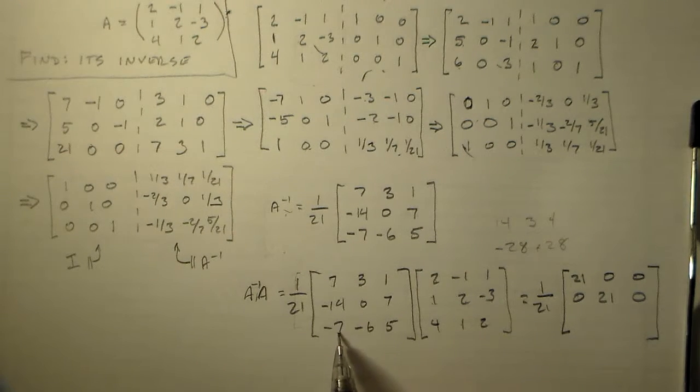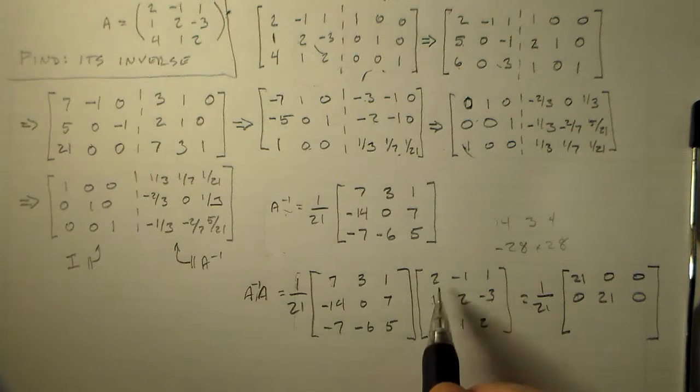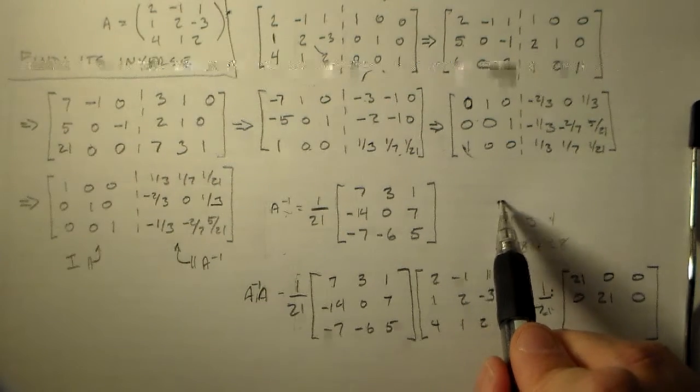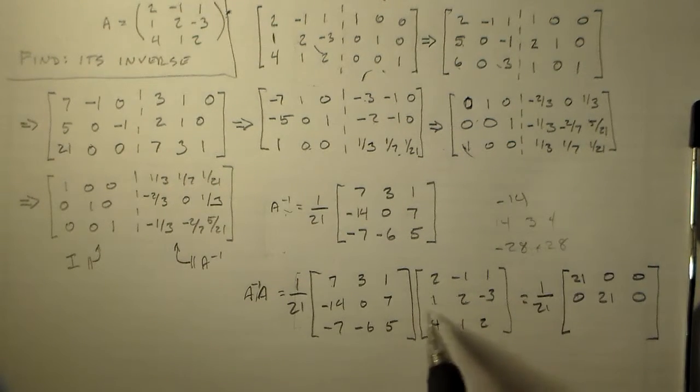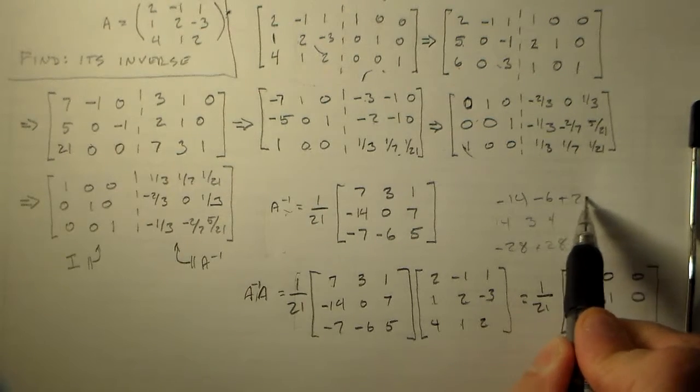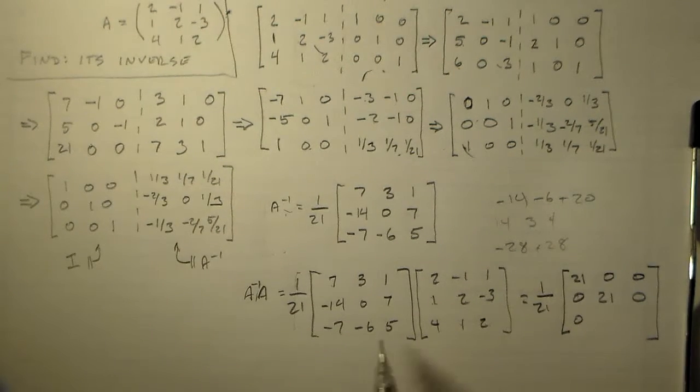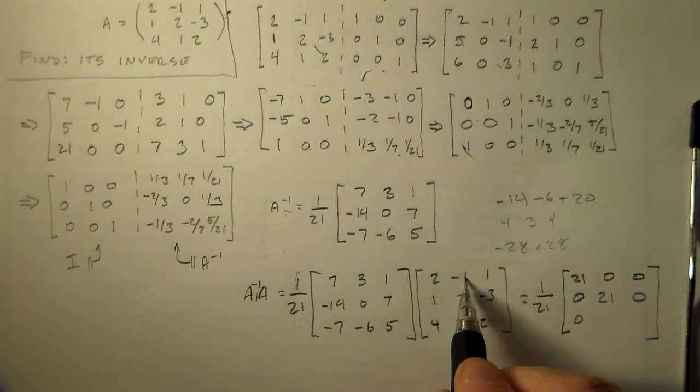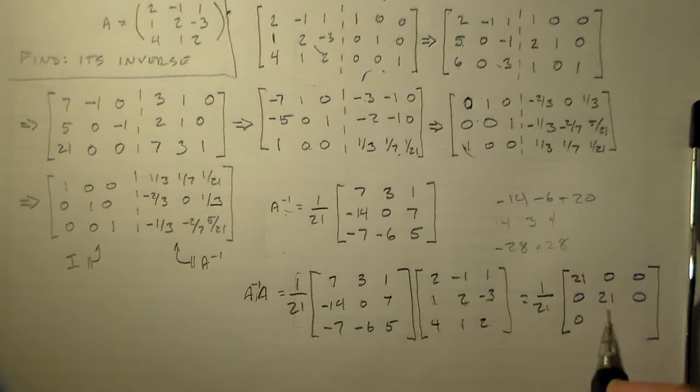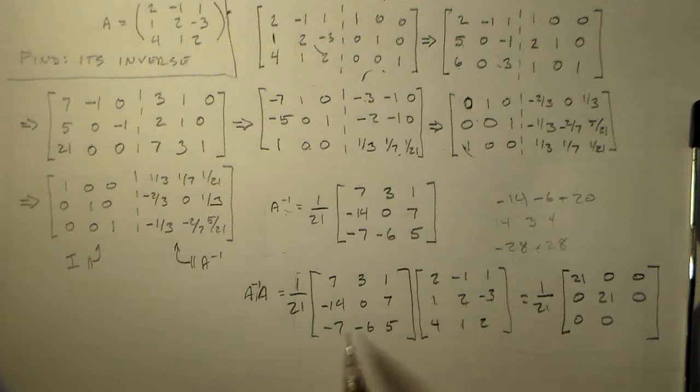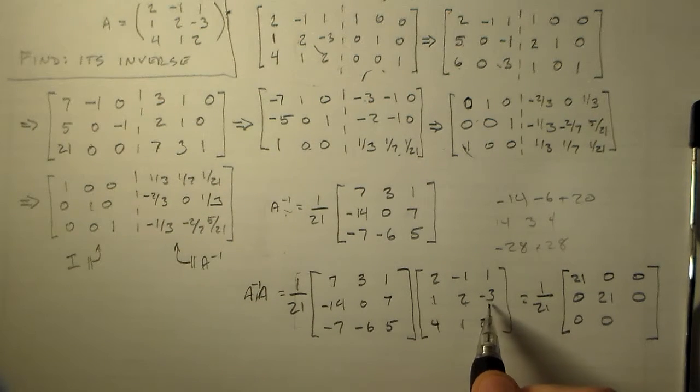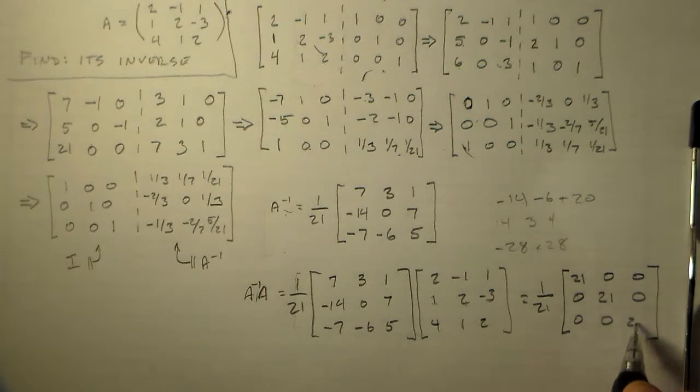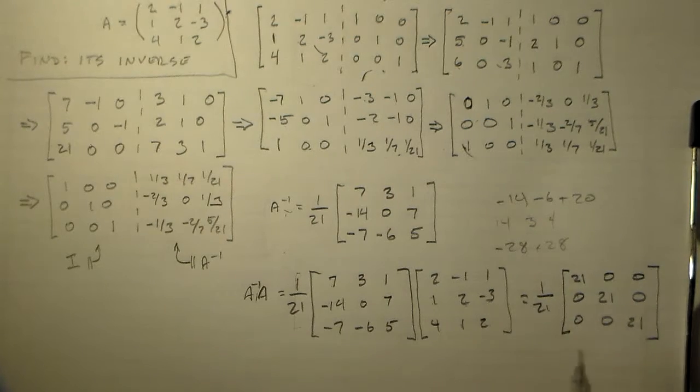Then we have minus 7 times this guy which is minus 14. Then we have minus 6 plus 20 which is 0. We're cruising, we're cruising. So we have 7 minus 12 plus 5, hey 0 again. So we have minus 7 plus 18, so that's 11, and 11 plus 10 is 21, which is just the identity matrix. Divide that by 21, it's 1, 1, 1.